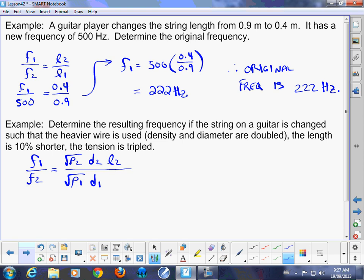The length is involved, so I need to put length in there, l2 and l1. And the tension is also in there, so I need to include square root of t1 over square root of t2. So you can multiply each of those individual fractions together.